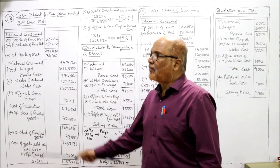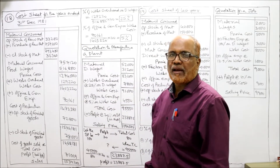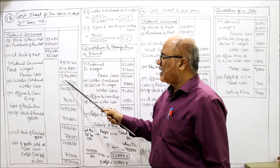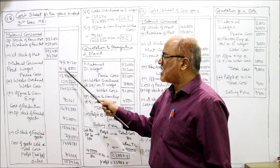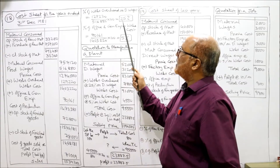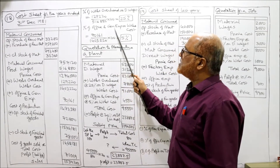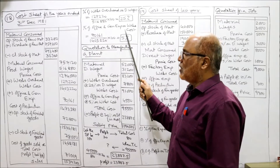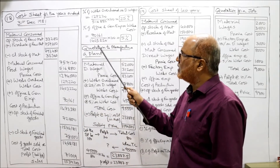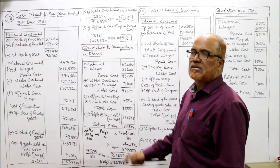So we have prepared the complete statement of cost. Now we have to calculate the percentages. Percentage of works overhead on direct wages: works overhead are 1,29,220, direct wages are 5,16,880, so 1,29,220 divided by 5,16,880 = 25%. So works overhead are 25% of wages. Then percentage of office and general expense on works cost: office and general expense are 70,161 and works cost 14,03,220, so 70,161 divided by 14,03,220 = 5%.